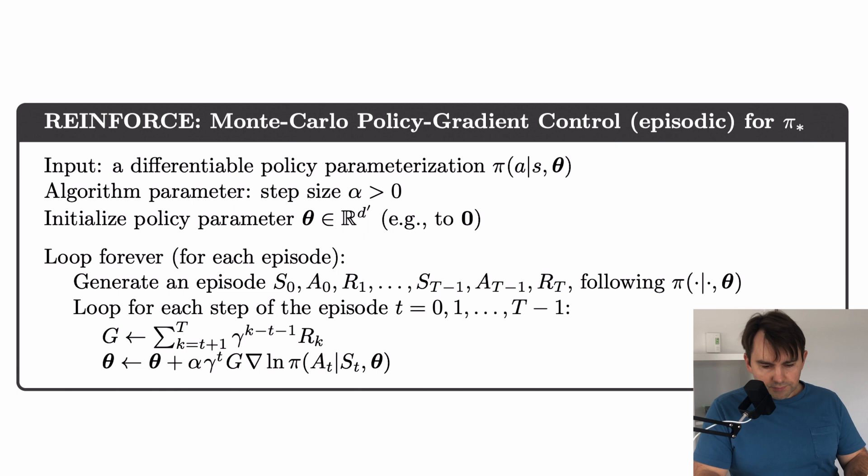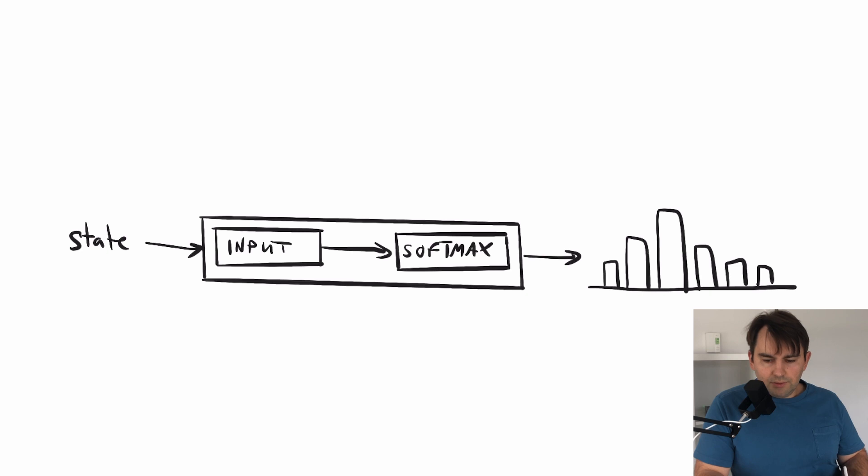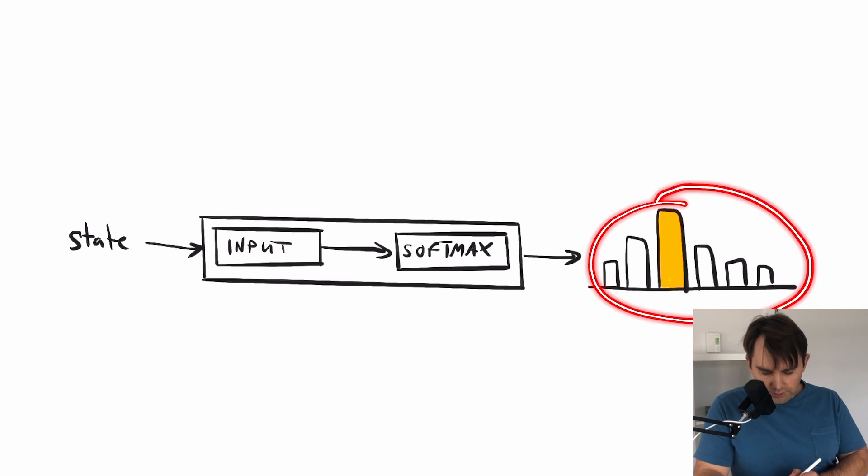To get the action, we sample it, meaning we take our state, feed it into our policy, and we get the softmax over possible actions. This forms a probability distribution. Then we sample an action from this distribution. As you can see, some actions are more likely to be picked, while others are less likely. Regardless, once we sample our action, we have a concrete action. In this case, perhaps we sampled the yellow action because it was more likely.